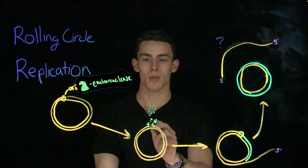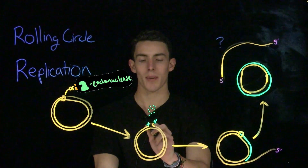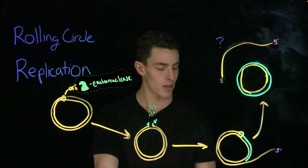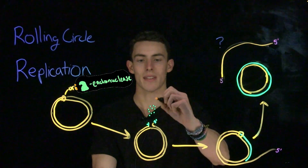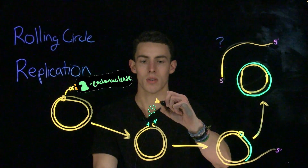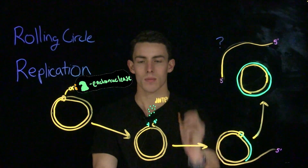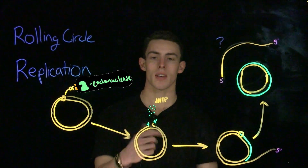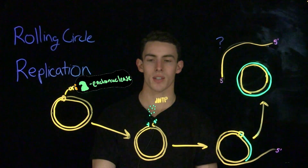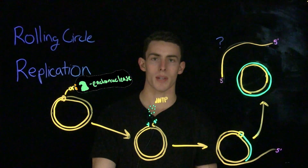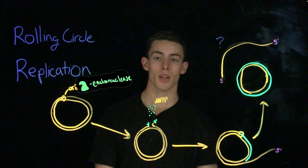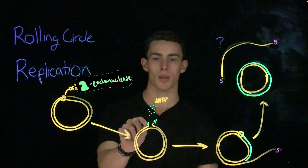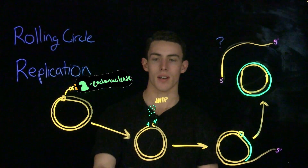When we make that single-stranded cut in the DNA, we have a three prime end and we have a five prime end. Which end do we add the dNTPs to? We need a free three prime hydroxyl group, so we're going to start adding to the three prime end of this molecule.